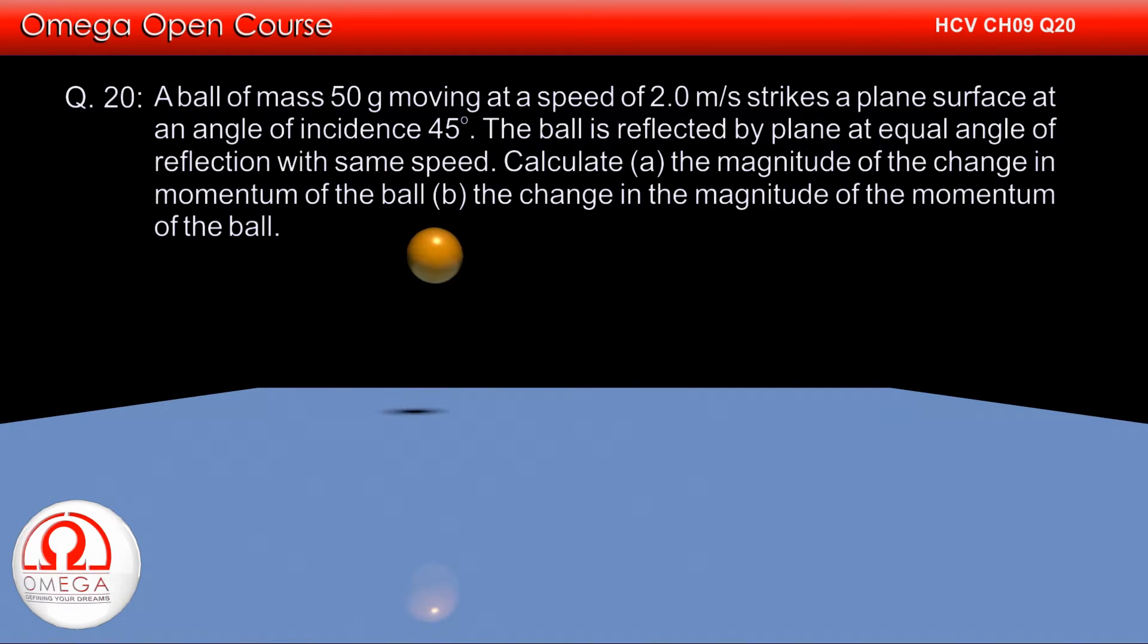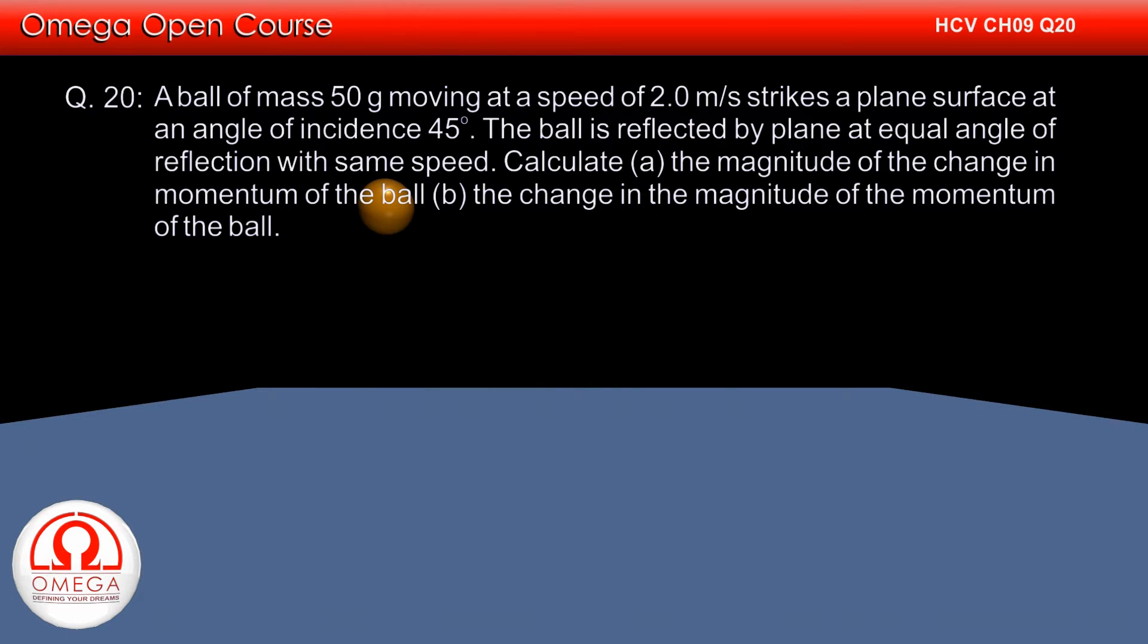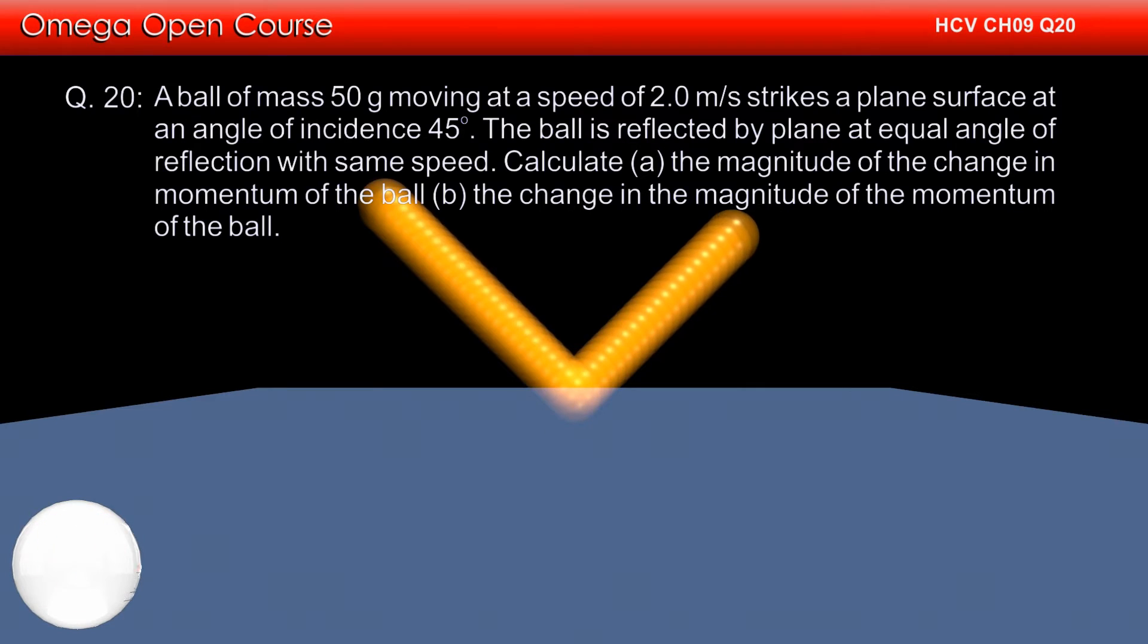A ball of mass 50 grams moving at a speed of 2 meters per second strikes a plane surface at an angle of incidence 45 degrees. The ball is reflected by plane at equal angle of reflection with same speed. Calculate A: the magnitude of change in momentum of the ball, and B: the change in magnitude of momentum of the ball.